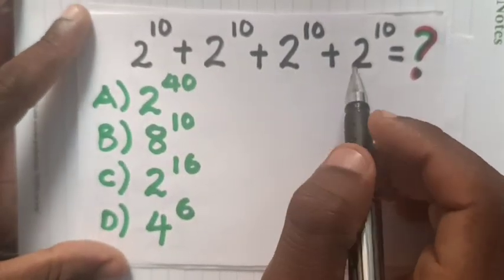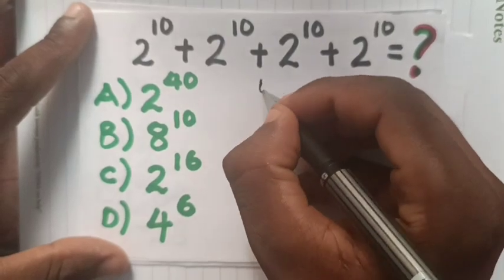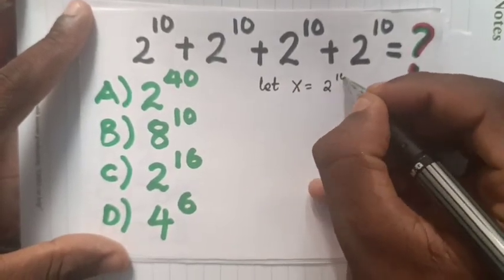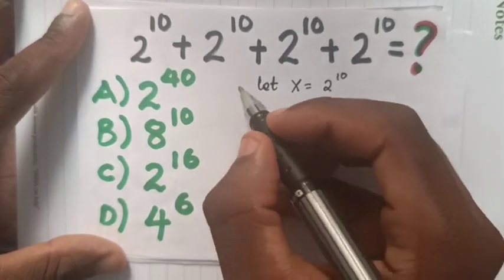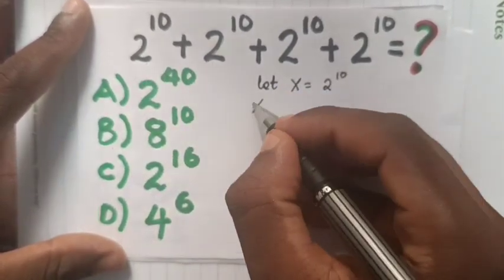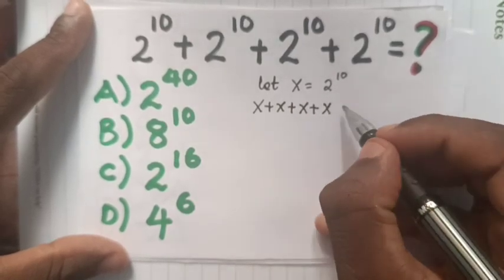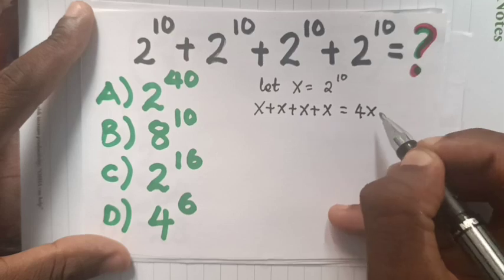If 2 power 10 is common, we let x equal 2 power 10. It will be x plus x plus x plus x, which is equal to 4x.